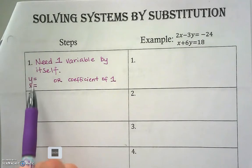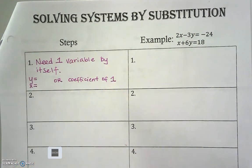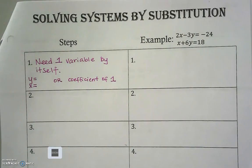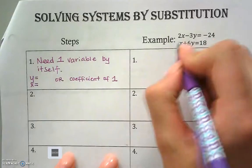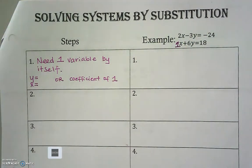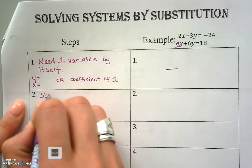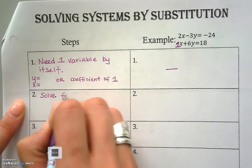More likely than not, when we solve by substitution, we're going to have an equation that's already isolated. That variable is already isolated, but sometimes we won't, and we can still use substitution. Looking at our example, which variable has a coefficient of one? You should notice that x does — there's an understood one.